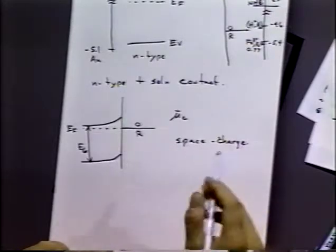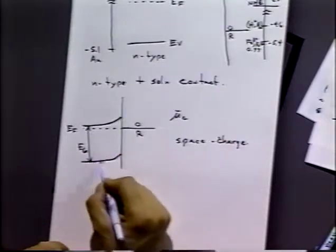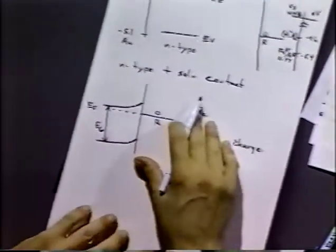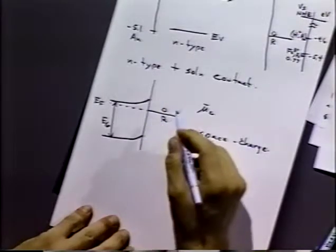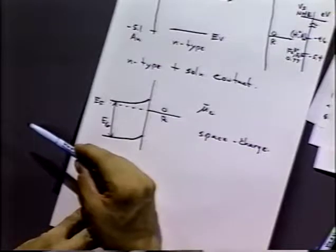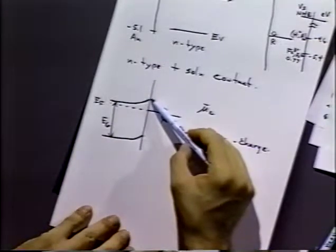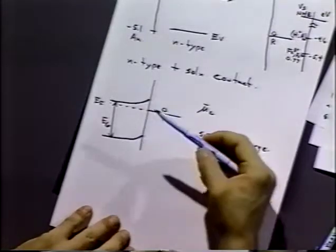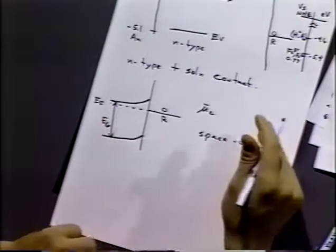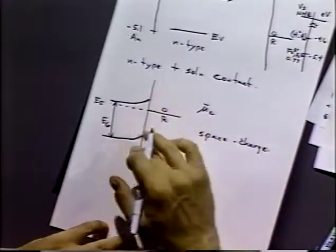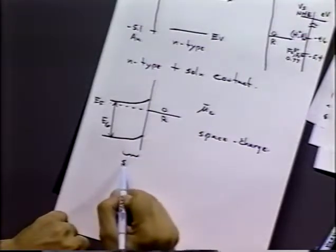The energy bands tend to bend up. We have a higher energy now for the conduction bands and the valence bands than in the bulk of the semiconductor itself. The energy at the surface for the conduction and valence bands is higher than in the bulk because we've taken away some electrons, so the interfacial region is positively charged — there is a space charge region.